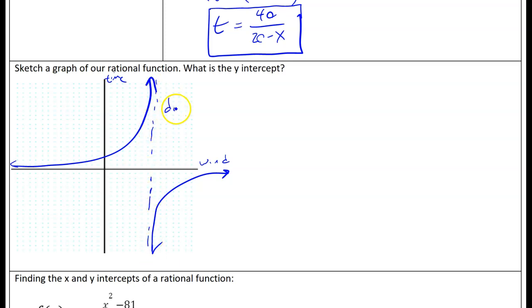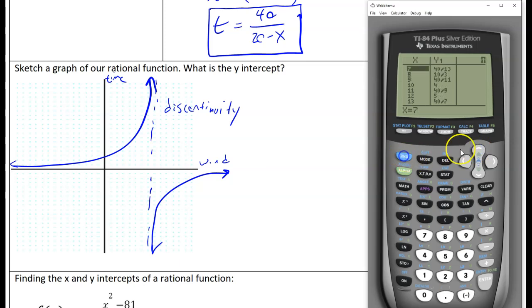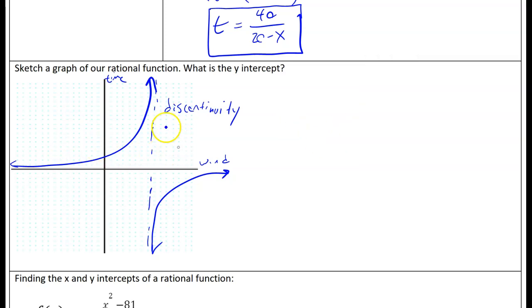We call that, remember from our work on limits, a discontinuity. So this graph has a discontinuity in it. If we use our graphing calculator intelligently, we can figure out what that is. We're looking at the table now. As I scroll down, I see I get an error at x equals 20. That makes sense because look at what happens to our denominator when x equals 20.